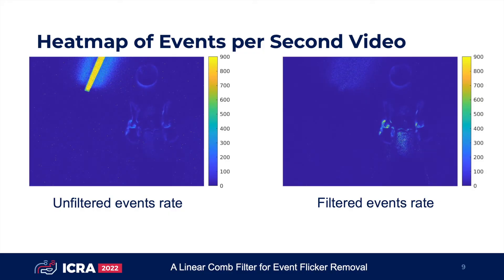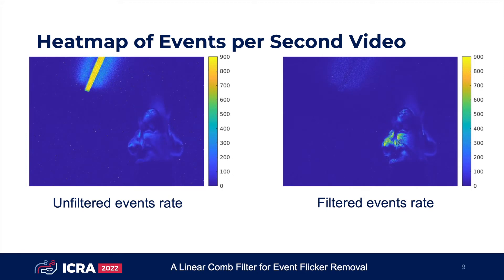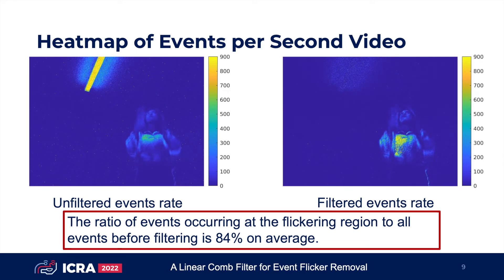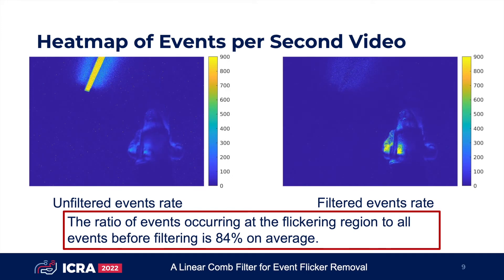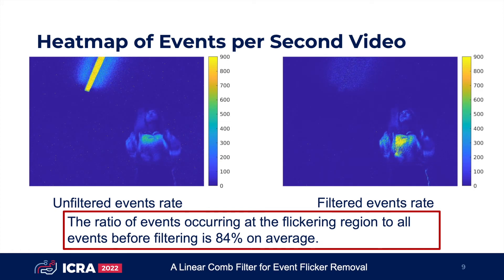We also provide heat map analysis of events per second to visualize the distribution of the unfiltered and filtered event data. The event rate from zero to the maximum is colored from blue to yellow. In the raw event stream, the number of flickering events is on average 84 percent of the total number of events. Most events are triggered by the fluorescent lights, leading to little or no useful information by occupying most event memory and computational resources.